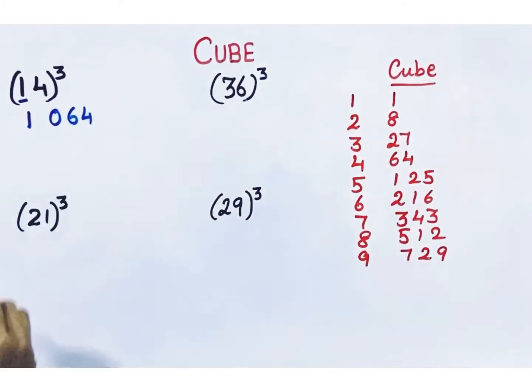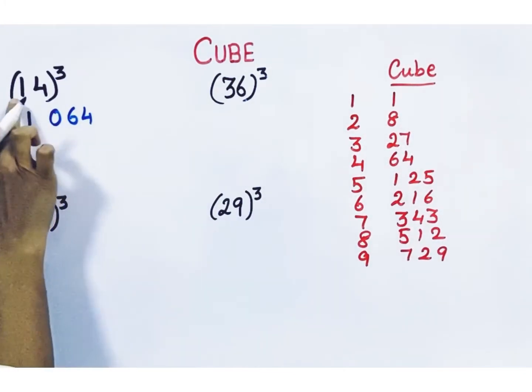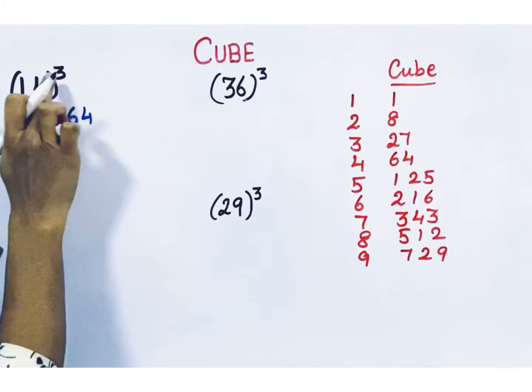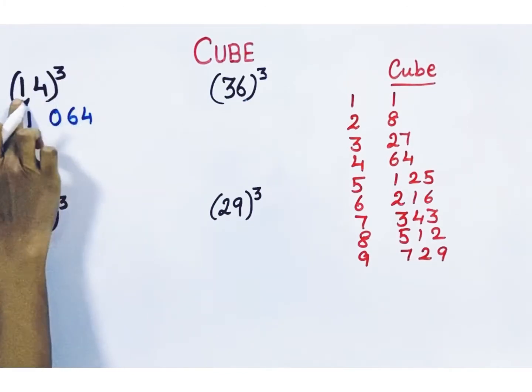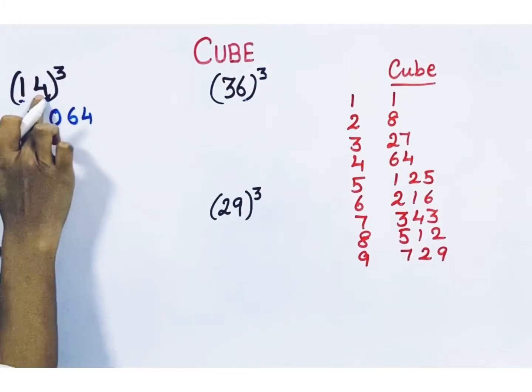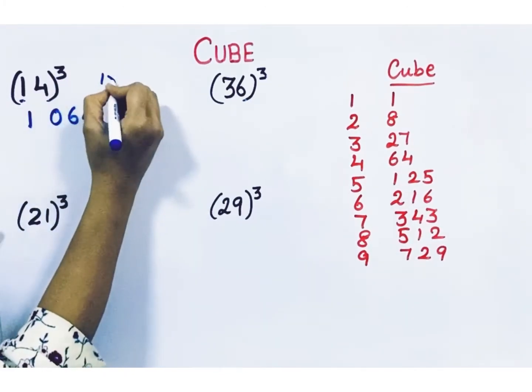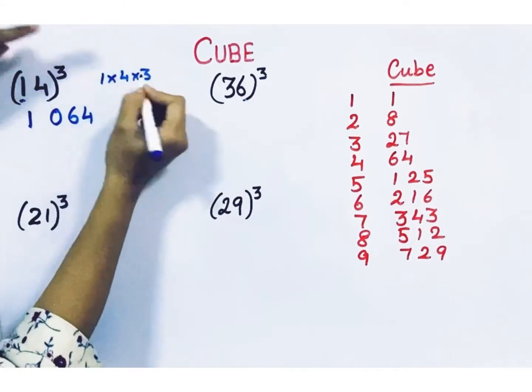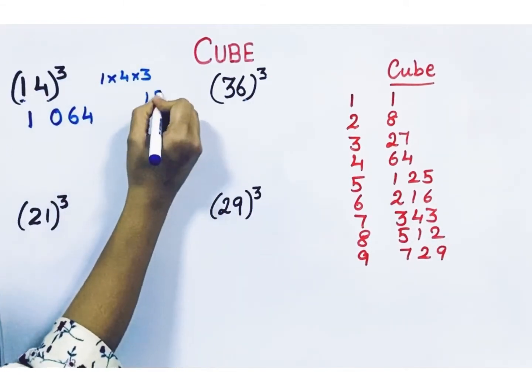Next step: take this 1, multiply with 4, and then multiply with 3. 1 times 4 is 4, times 3 is 12. So 1 into 4 into 3 is 12.